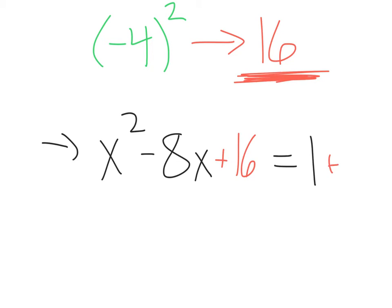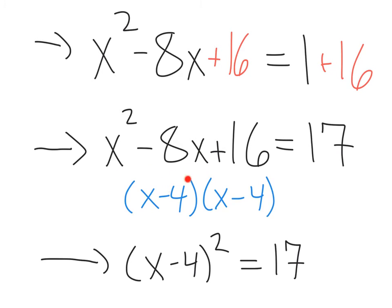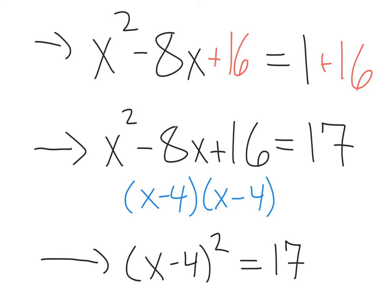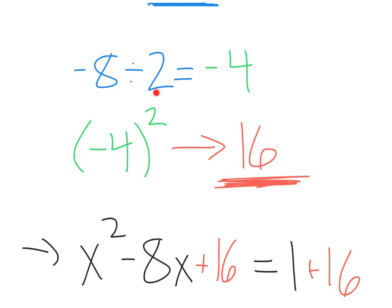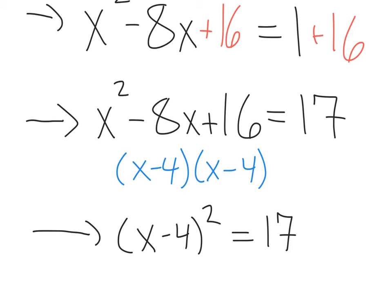So we'll have equals 1 plus 16. This might seem random, but you're going to see how it comes together right now. After adding 16, this is actually a perfect square trinomial. If we factor this, we get x minus 4 times x minus 4, which is x minus 4 squared, equals 17. You'll notice that this minus 4 term is always going to be that half of our b — our coefficient of x — and it becomes our perfect square: x minus 4 squared equals 17.